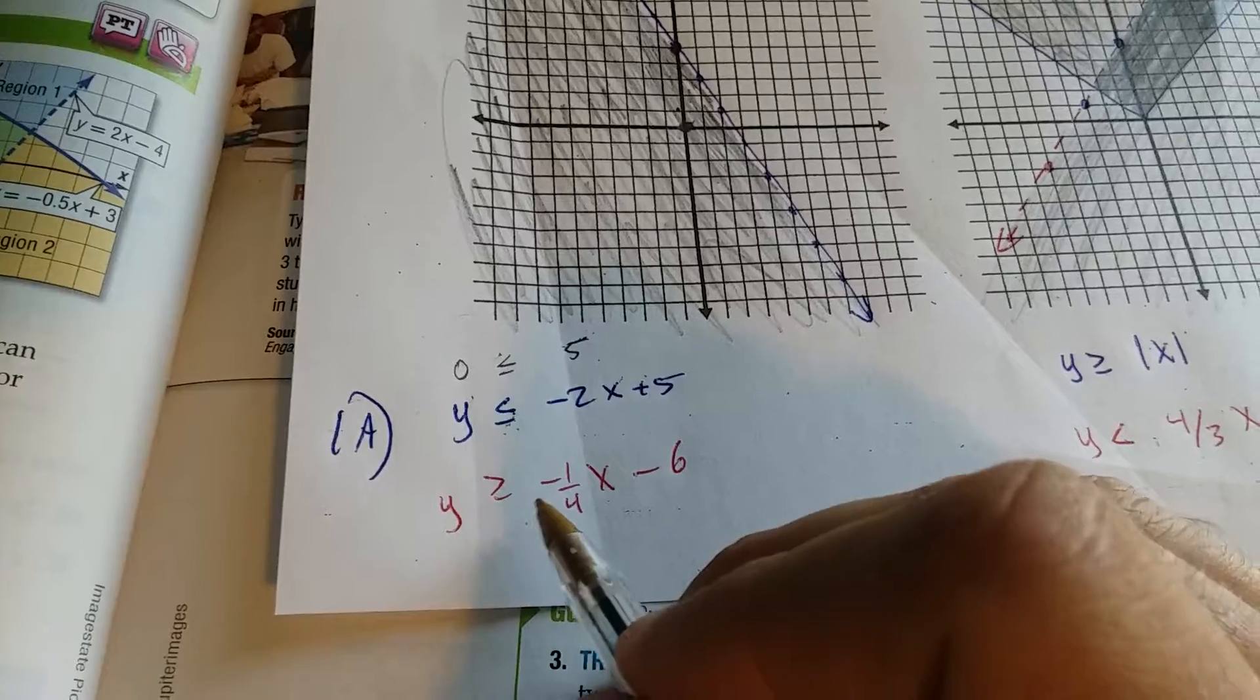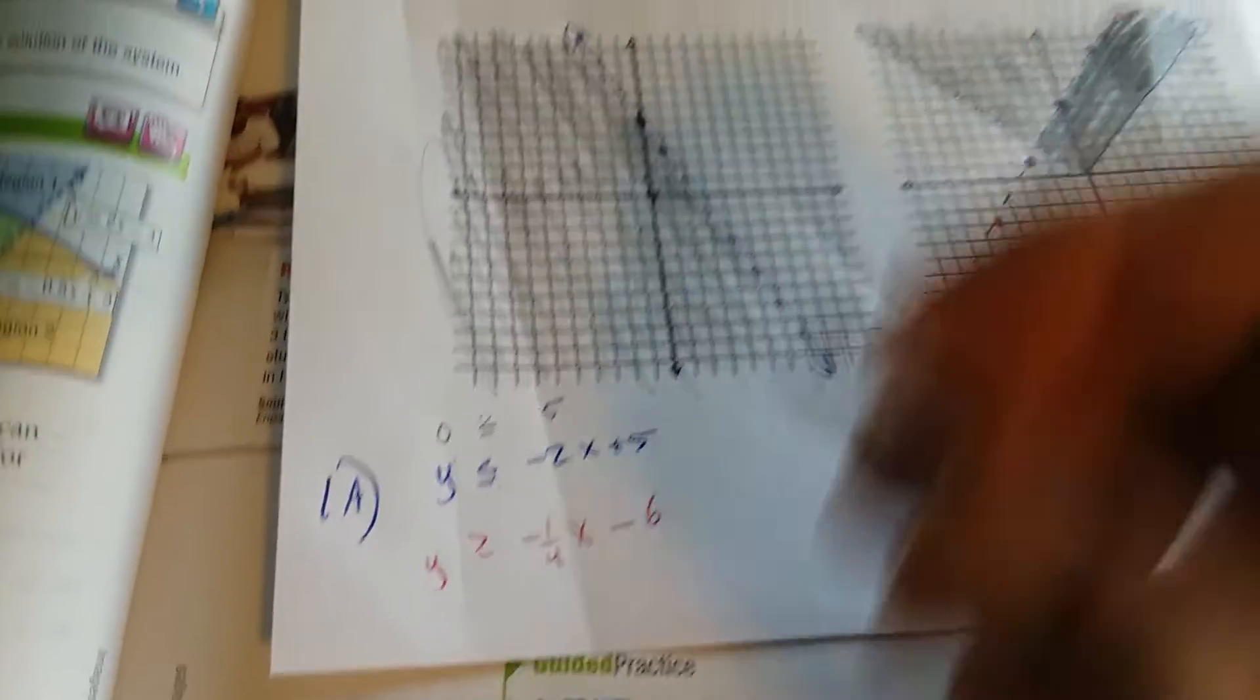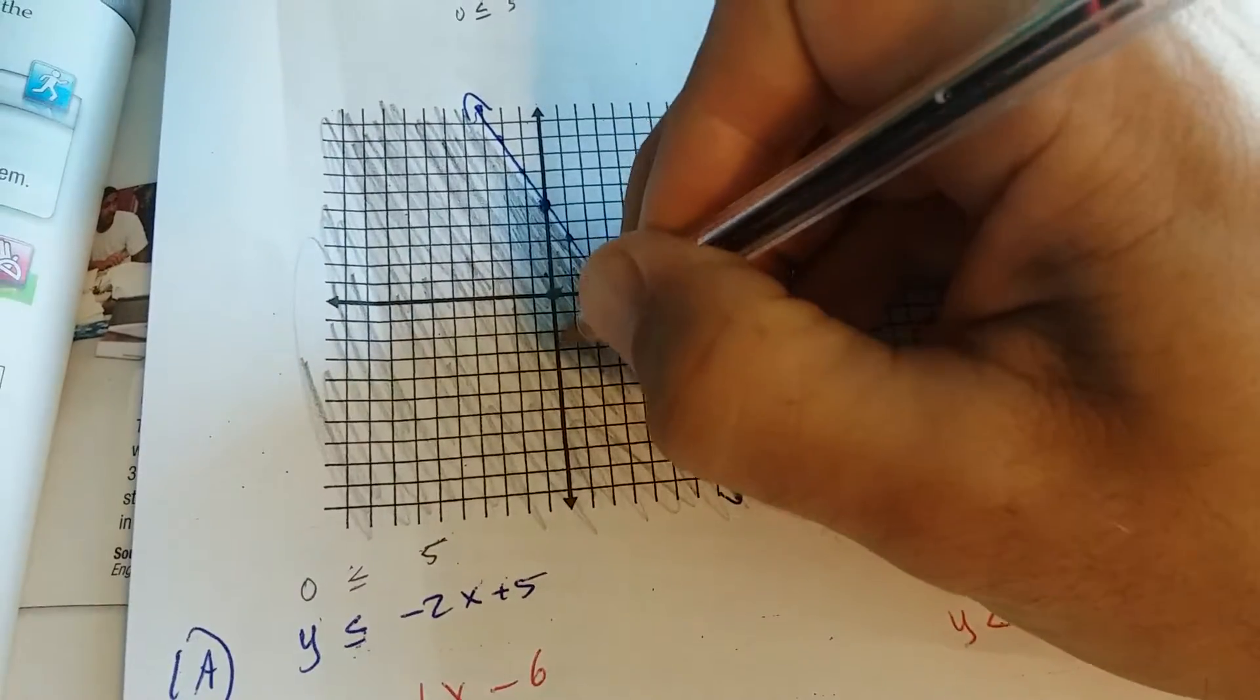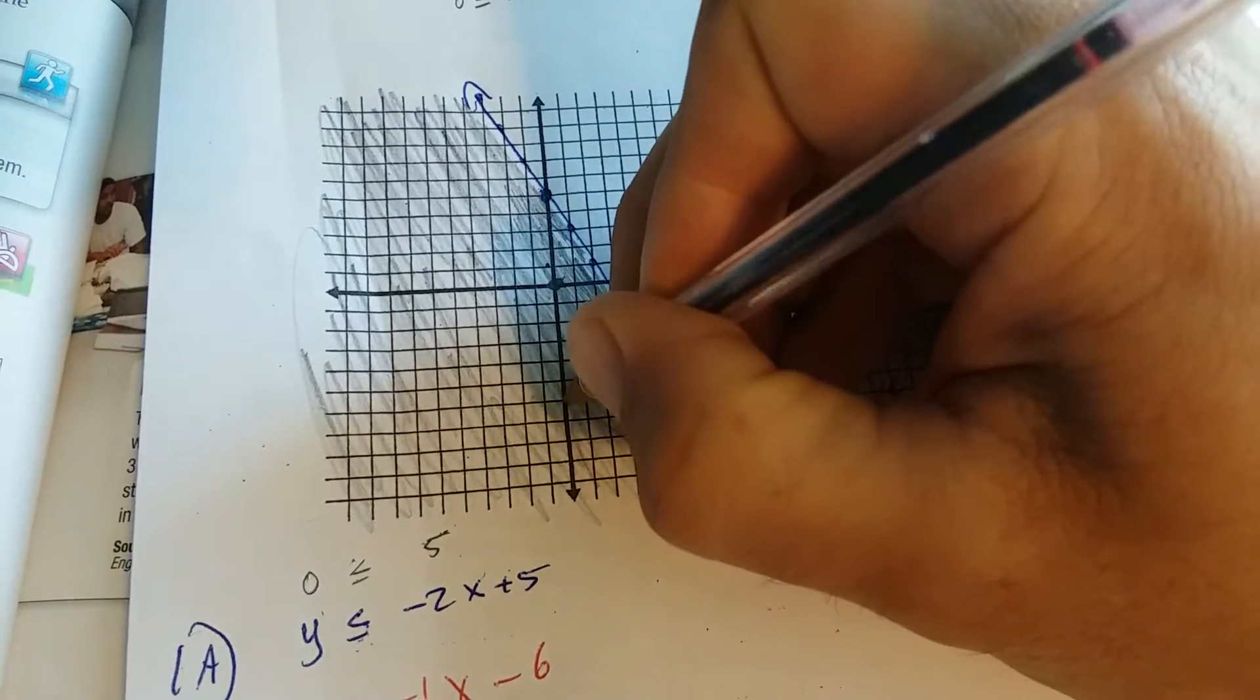All right. The other inequality's right here. y is greater than negative 1/4 x minus 6. So I'll go down 6. 1, 2, 3, 4, 5, 6.